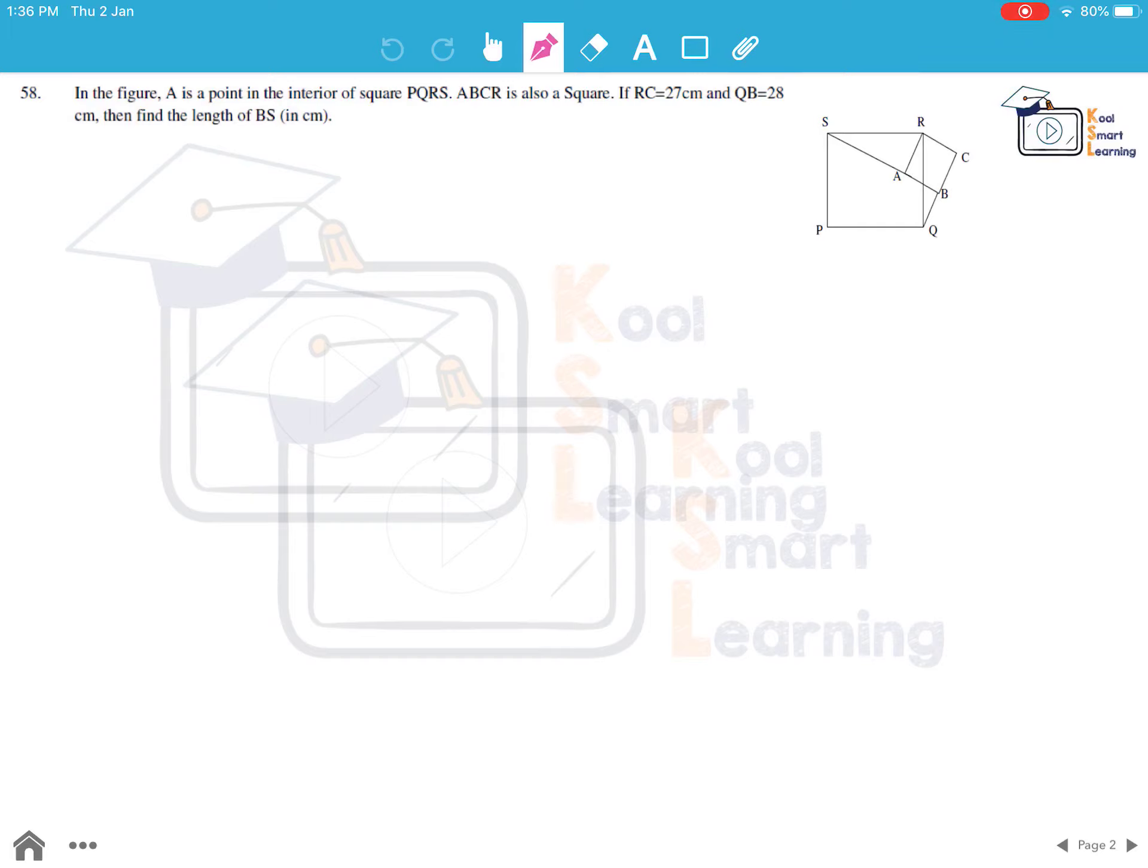So the question is, in the figure, A is a point in the interior of square PQRS. ABCR is also a square. If RC is equal to 27 cm and QB is equal to 28 cm, find the length of BS in cm.